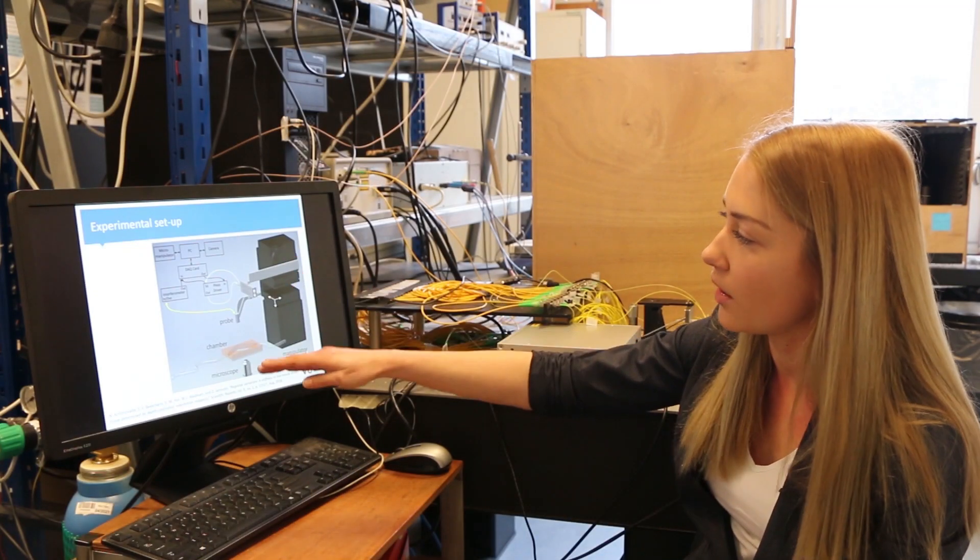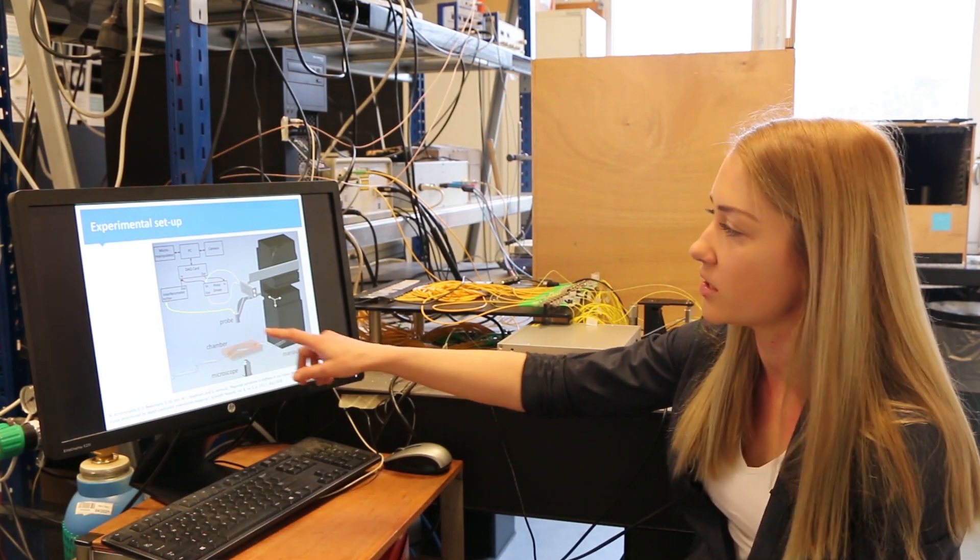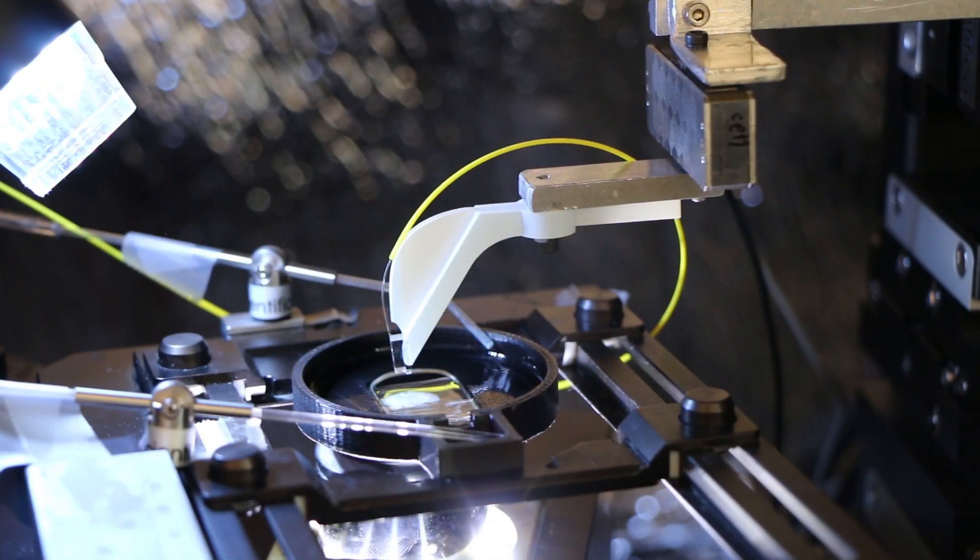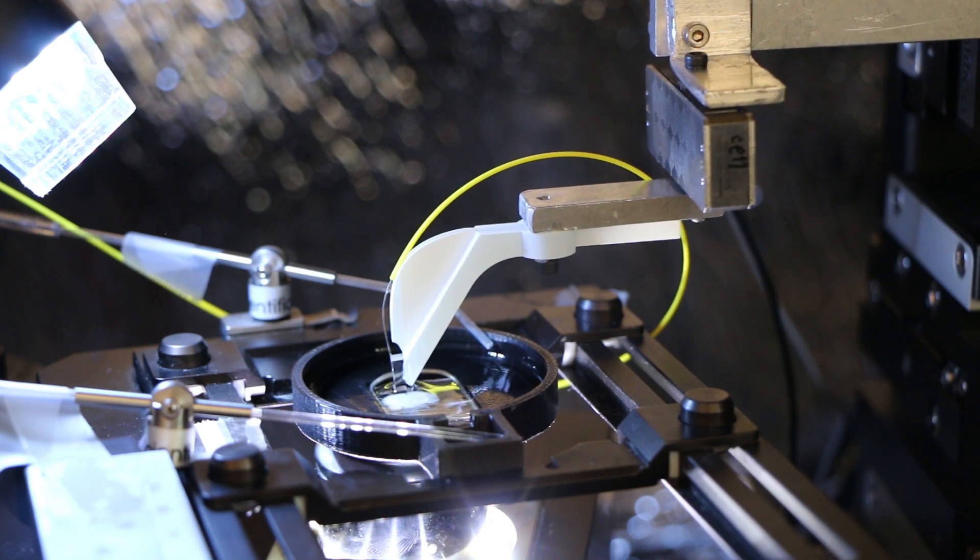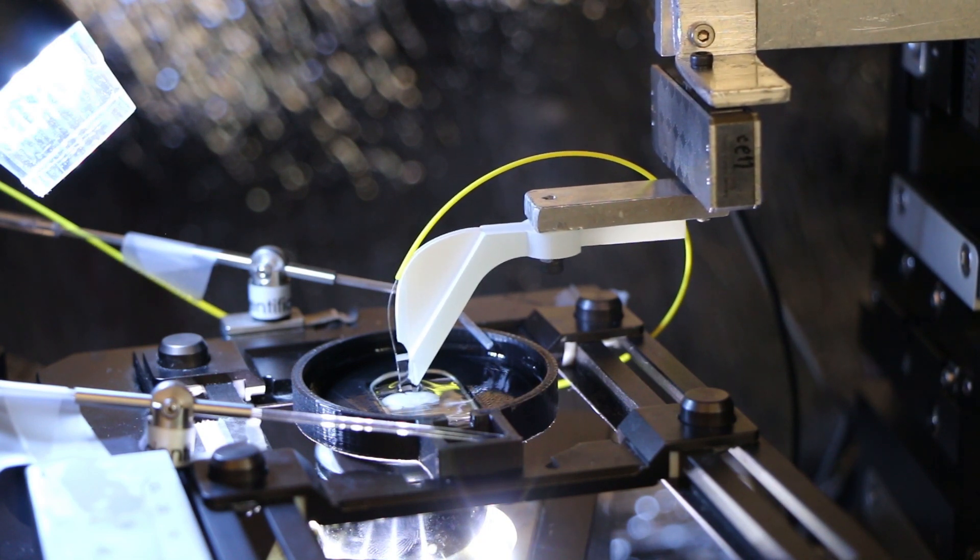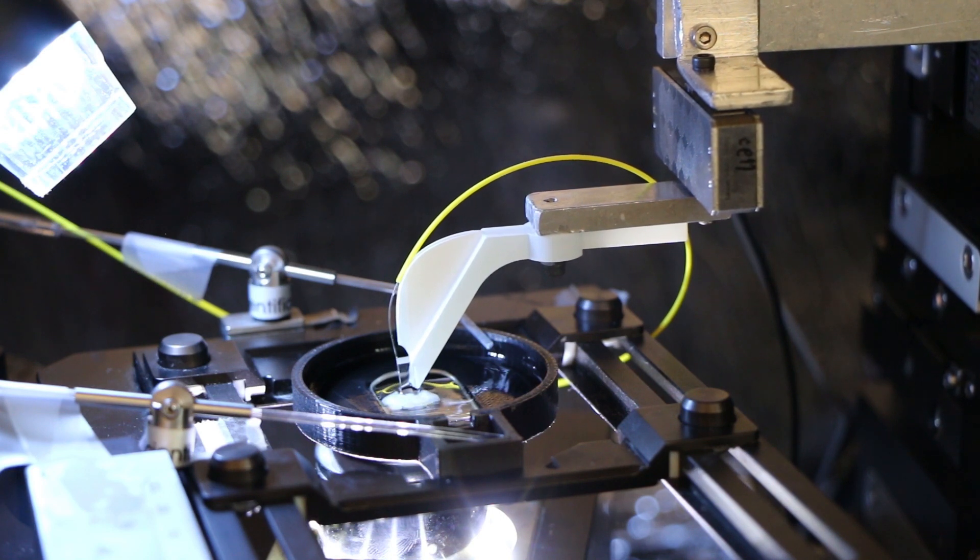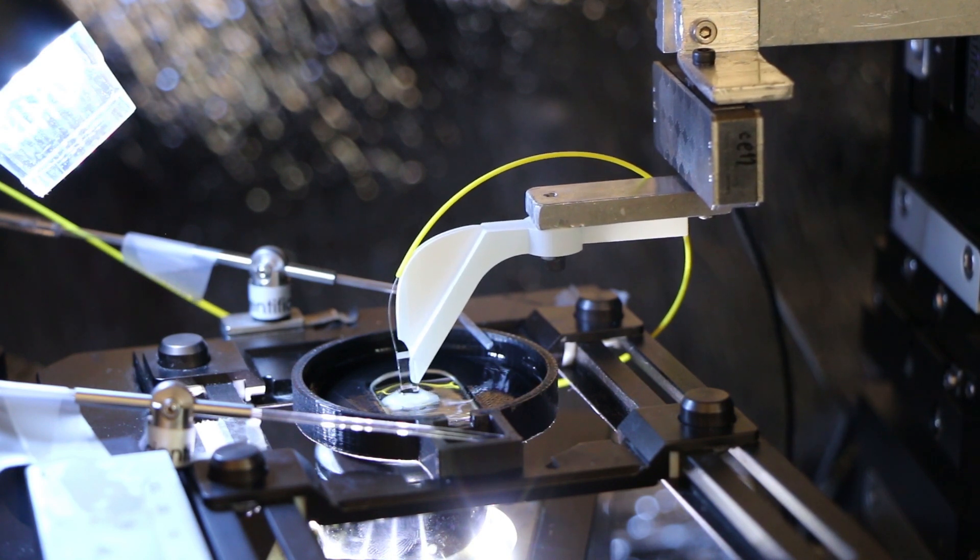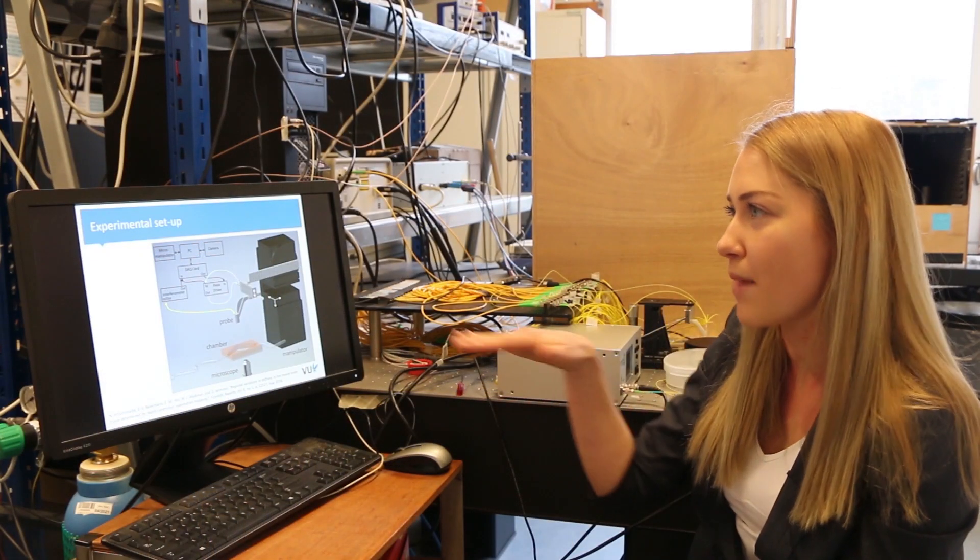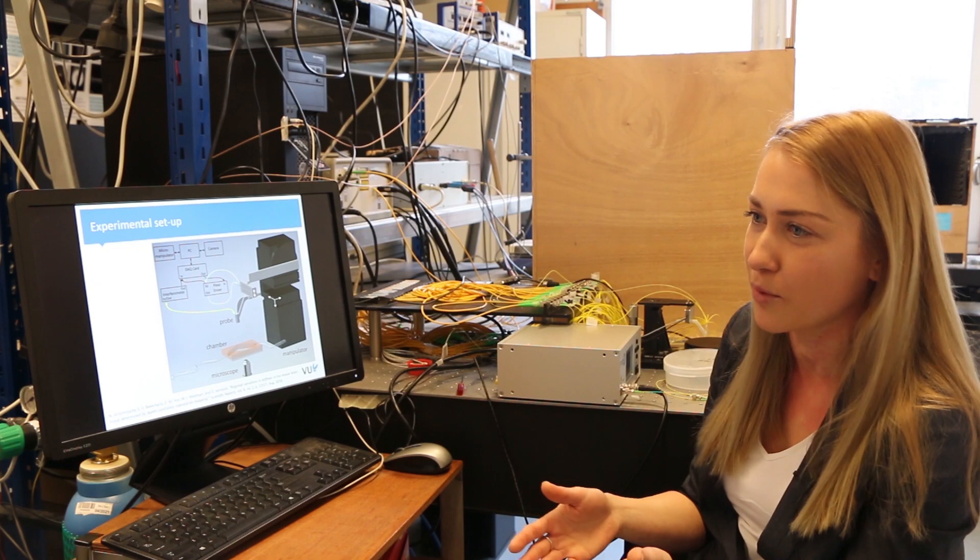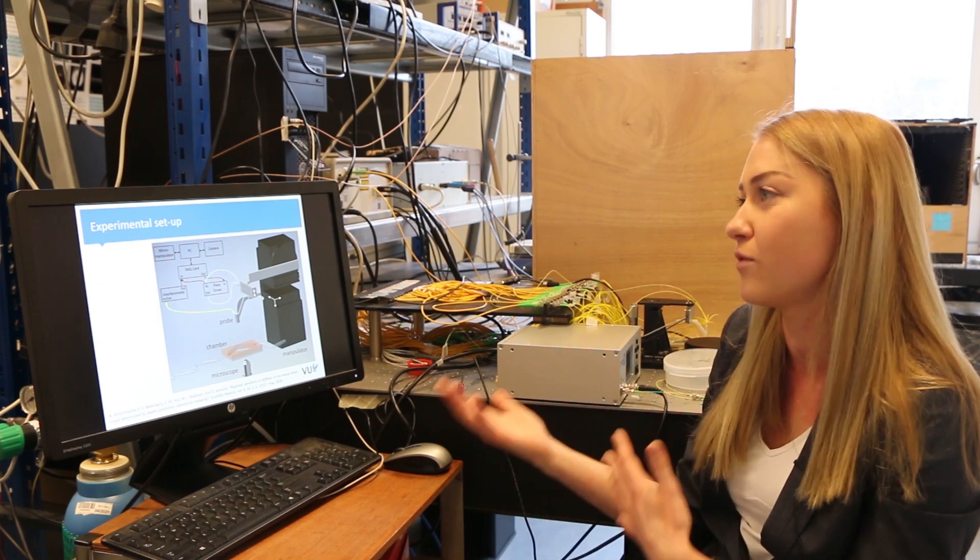We approach the sample which is mounted in this chamber and then we can perform indentation by scanning over the sample. And at the same time we can look at the microscope underneath to see which brain region we are measuring and how it looks like and use that information to map, to correlate mechanical properties to the actual structure of the brain.